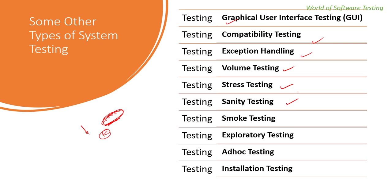Sanity testing is performed when a build is released with a change in code, functionality, or a bug fix. It verifies that the changes have not affected the code, no new issues have been introduced, and the system works as before. If any issue occurs, that build is not accepted for further testing. Importantly, thorough testing is not done during sanity testing to save time and cost — it is done only for the changed or fixed areas, not the complete system.